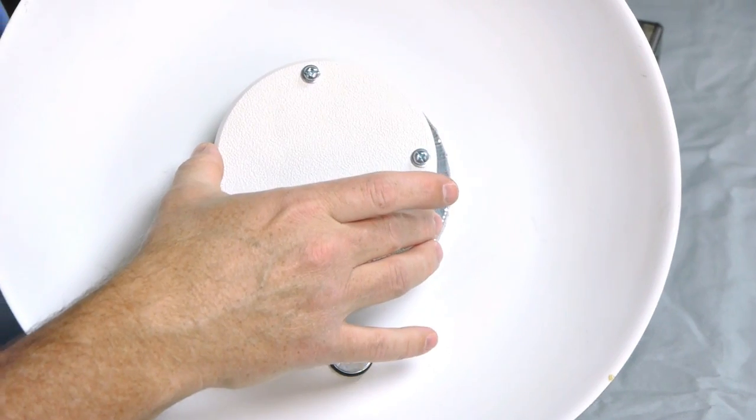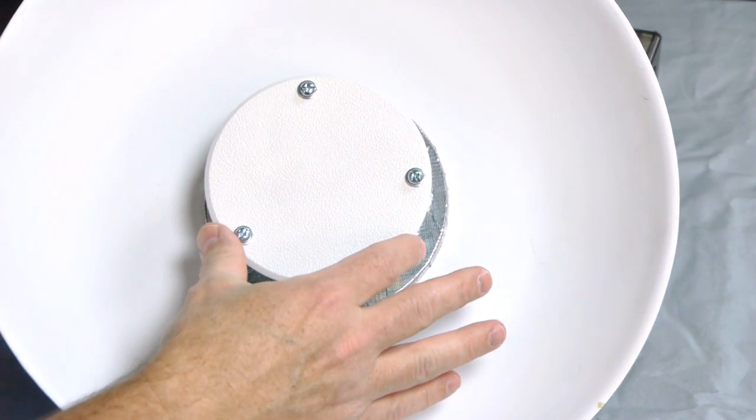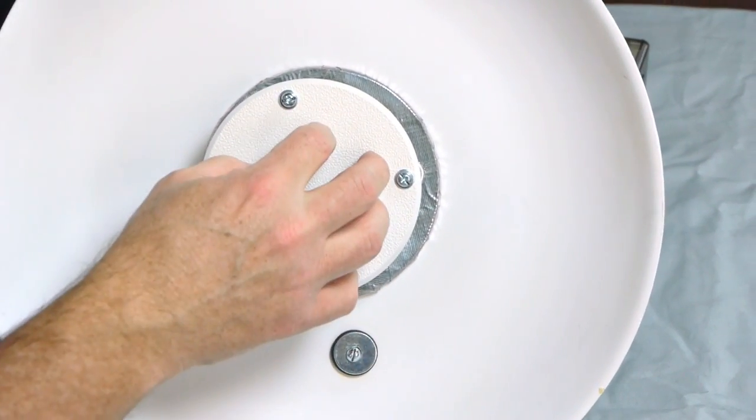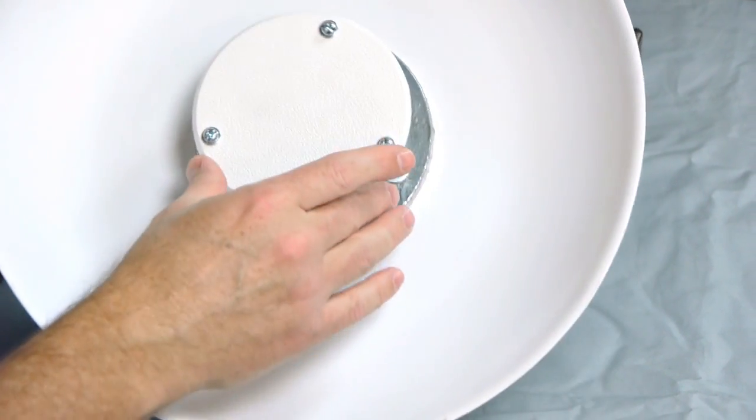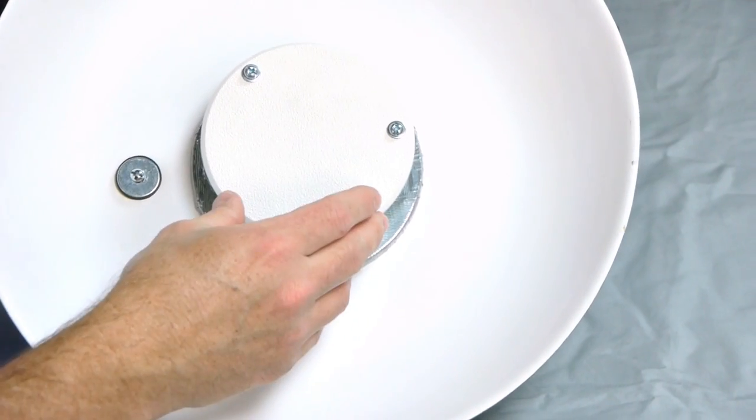This piece right here is a door saver which you mount on the door so when the door closes and the doorknob hits it, it doesn't poke through. Home Depot, Lowe's, $3.95.